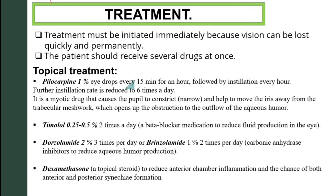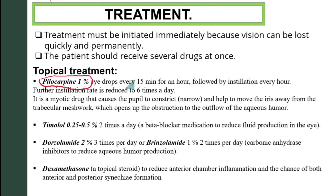Treatment must be initiated immediately because vision can be lost quickly and permanently. The patient should receive several drugs at once. Starting with topical treatment: pilocarpine 1% eye drops every 15 minutes for an hour, followed by instillation every hour, then reduced to six times a day. Pilocarpine is a miotic drug that causes the pupil to constrict and moves the iris away from the trabecular meshwork, opening the obstruction to aqueous humor outflow.